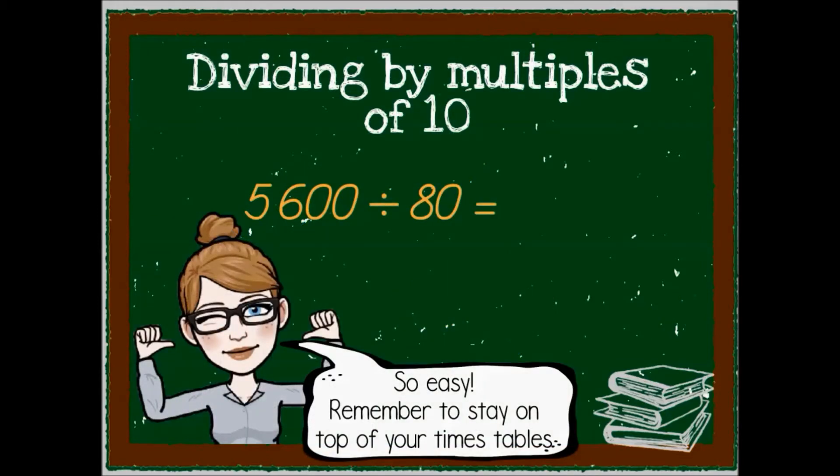Last one, 5600 divided by 80. First, we take away as many zeros as we can on both sides, 1 from 80 and 1 from 5600. But still, 560 is too much to divide by 8. So I divide the 56 by 8 first and that gives me 7, and we take the leftover zero and add it to our answer.